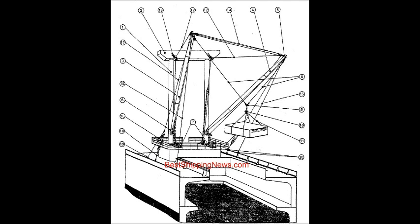Derrick Boom Positioned Outside the Ship, Outboard Boom. Derrick Heel Gooseneck Fitting, Derrick Head Fitting, Cargo Winches, Cargo Runners or Married Falls, Cargo Triangle Plate, Cargo Hook Slings.